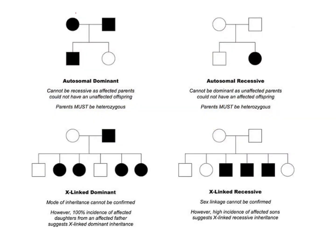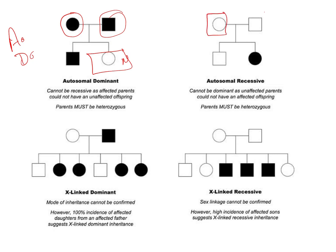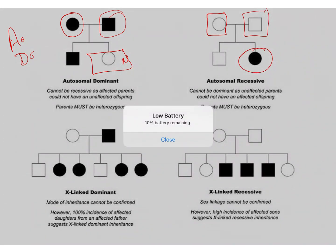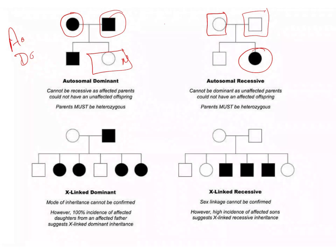For example, if the mother and father are both diseased but one offspring is normal, that means it is autosomal dominant. Then if the male and female parents appear normal but one offspring is diseased, that means it is going to be autosomal recessive.